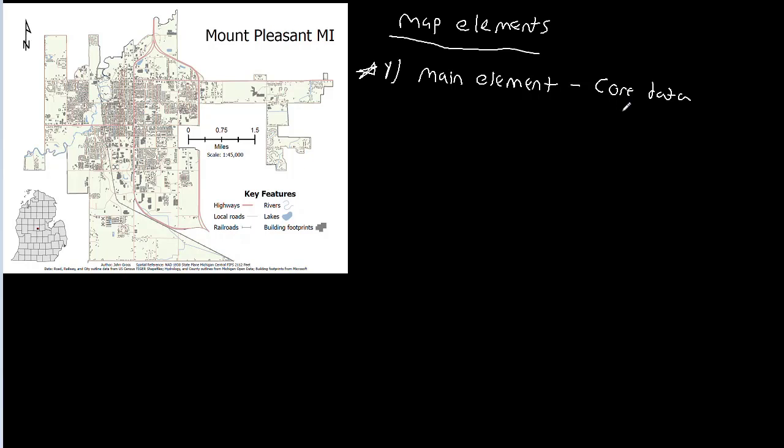This is going to be all of the data layers that you want to make sure that the user sees and the user understands. In the case of a reference map, this is going to be all of the layers that are giving you the information about the area. In the case of a thematic map, it's the data that is being visualized to highlight the pattern. That's your main element. It should be the focus of the map. Generally speaking, it should be the largest thing on the map.